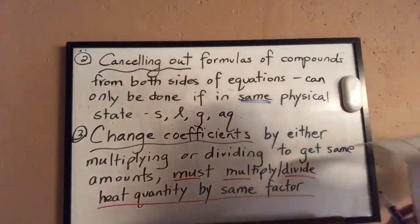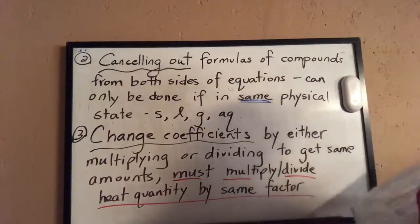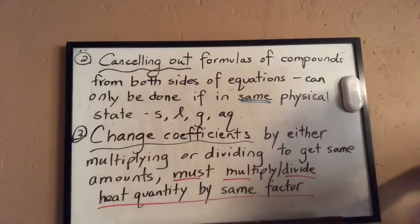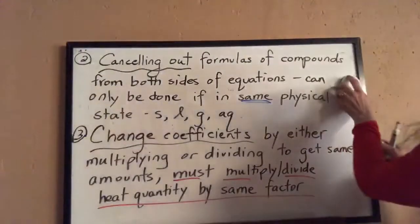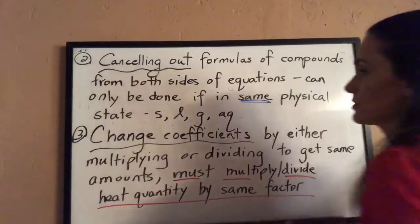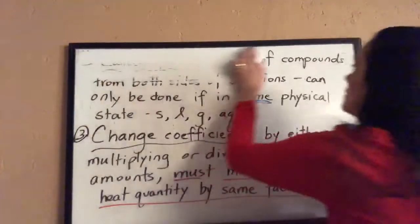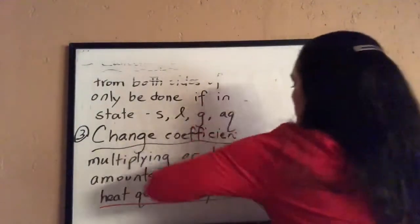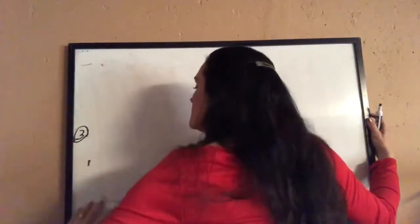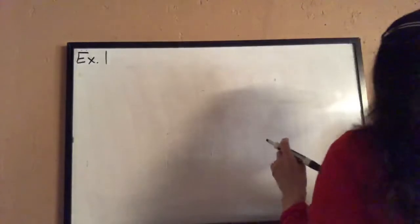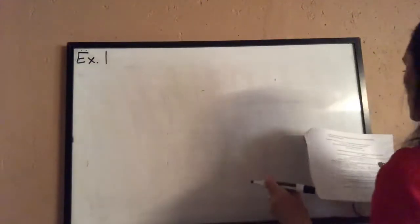We use this when a reaction may be too difficult to experimentally determine the heat released or absorbed, or when it's a complex reaction with multiple steps. This is one way — Hess's law. Let's look at two examples I have prepared.